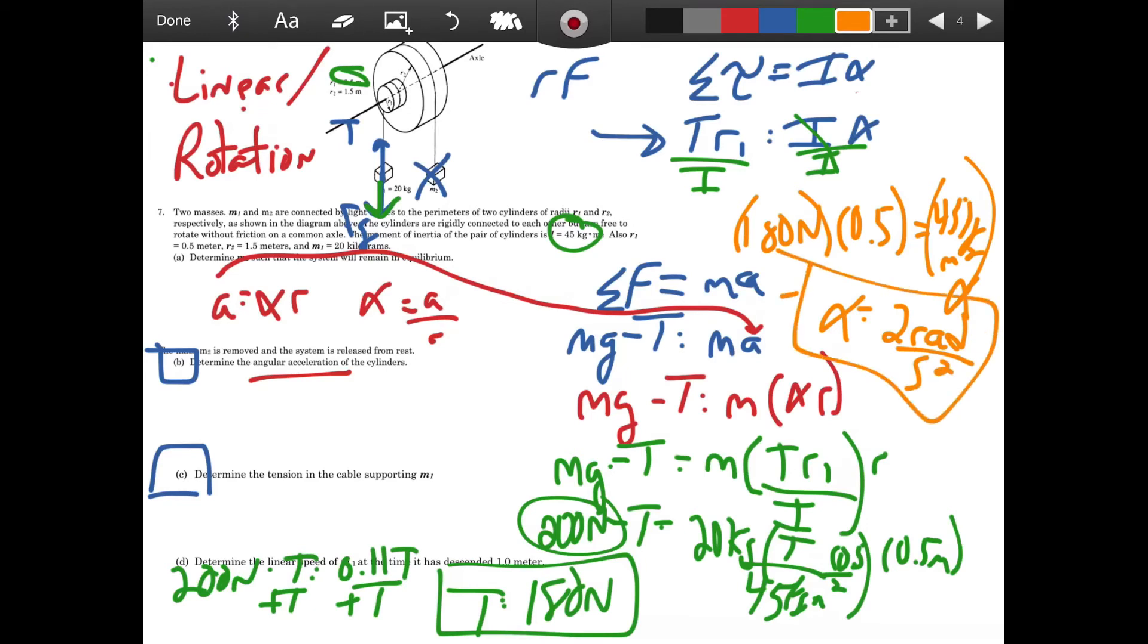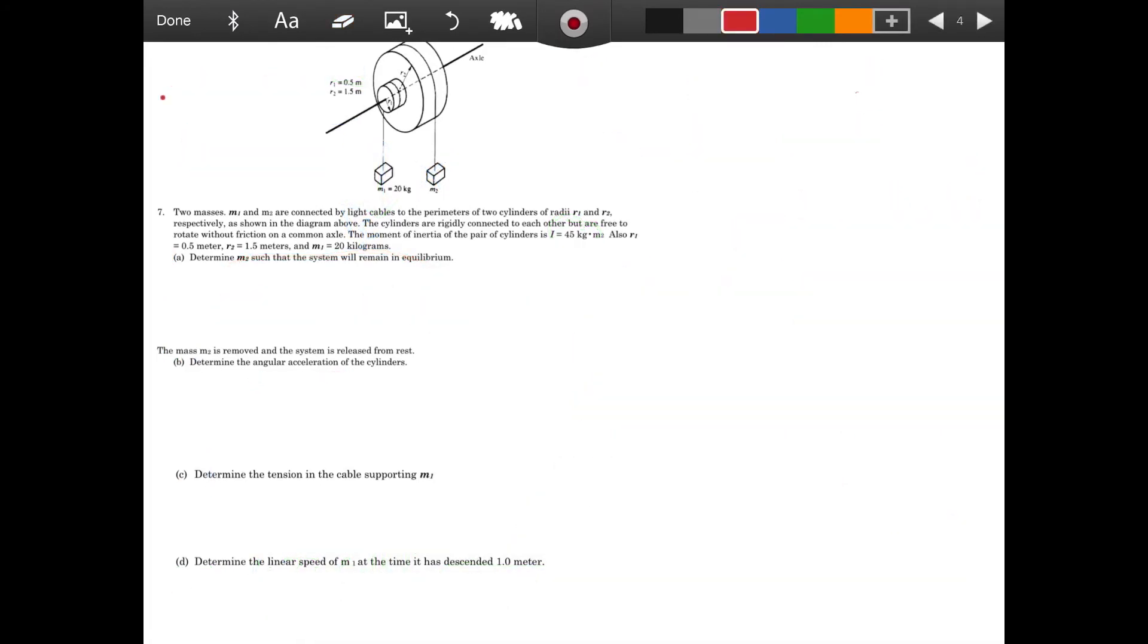And I'm going to erase this all before starting part D. But hopefully we are okay with part A, part B, and part C. Moving on to part D. Determine the linear speed of M1 at the time it's descended 1 meter. And this is important to know because I know if it has descended 1 meter, what that means is that I've lost gravitational potential energy.